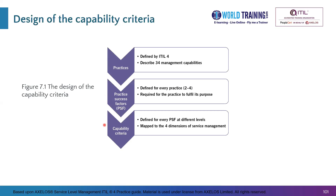Every practice success factor has certain capability criteria, and it is through these capability criteria that the maturity levels come into play. For a given practice success factor there could be seven, eight, or even more capability criteria, and each one is assigned to a specific maturity level. These criteria come from the different dimensions of service management — for example, roles and responsibilities, tools and technology, partners and suppliers, or processes.